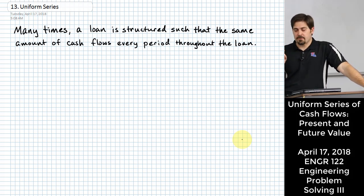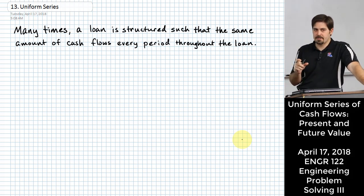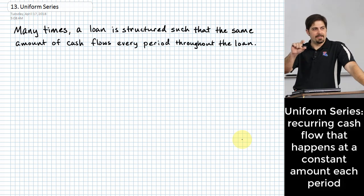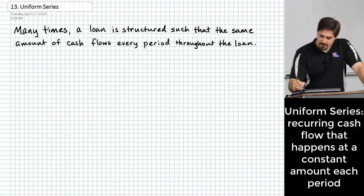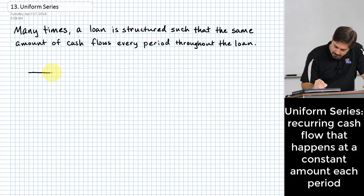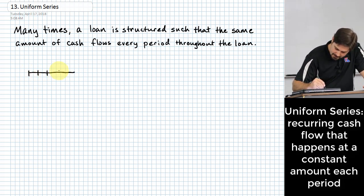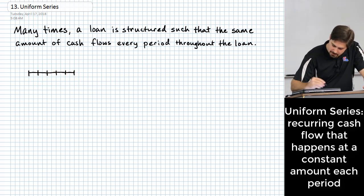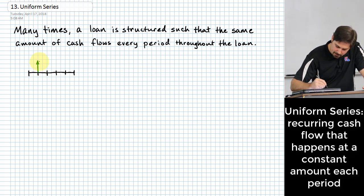A special case of cash flow diagrams is one where you have a number of cash flows that happen at uniform amounts for a specified period of time — the same amount happens over a period of time. This might look like a number of periods over time where you're making deposits into a bank account, from the perspective of the bank account.